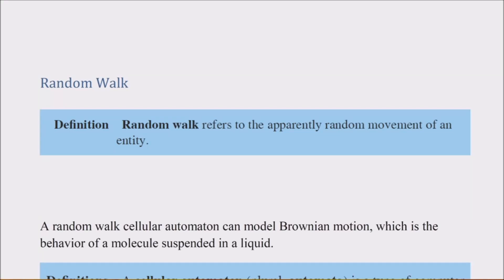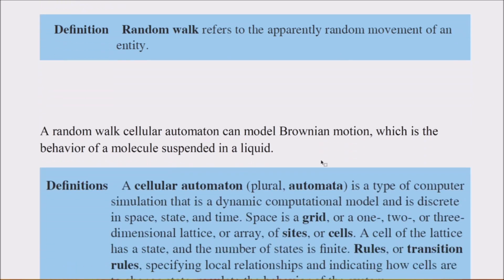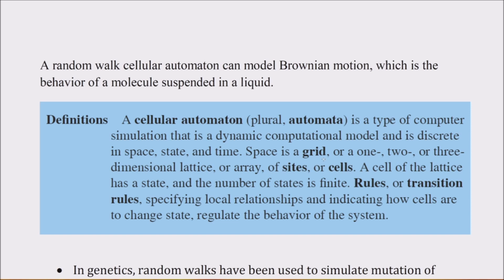Random walk is a very simple idea. I'm going to show you why and how it is important, what the applications are that use this concept. The definition says random walk refers to approximately random movement of an entity — so anything that moves randomly can be called a random walk.